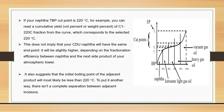The naphtha TBP cut point comes out to be around 220 degrees Celsius. For example, we can read a cumulative yield of C1 to 20 degree Celsius fraction from the curve, which corresponds to the selected 220 degree Celsius. This does not imply that your CDU naphtha will have the same end point — it will be slightly higher depending on the fractionation efficiency between naphtha and the next product of the atmospheric tower. The initial boiling point of the adjacent product will most likely be less than 220 degrees Celsius, so there is not a complete separation between adjacent fractions.